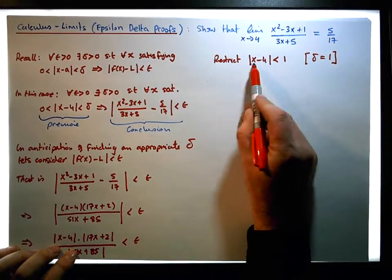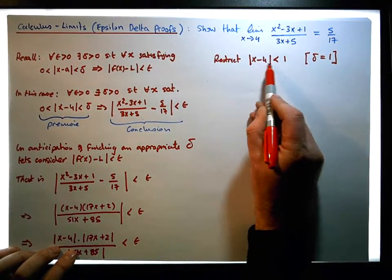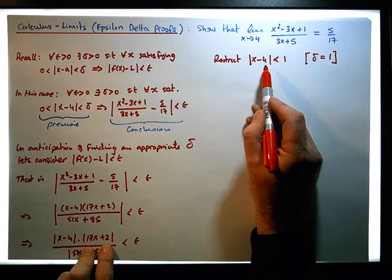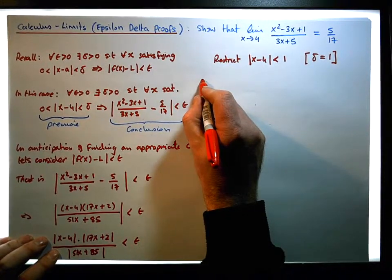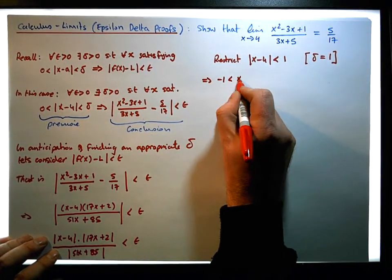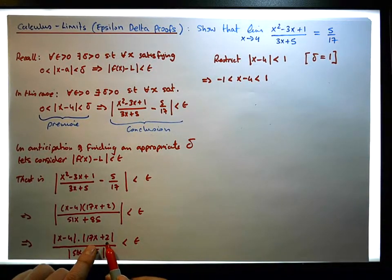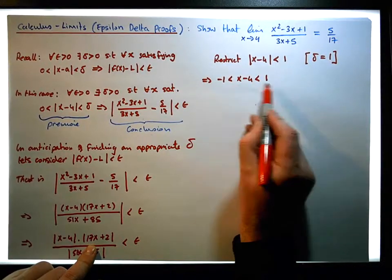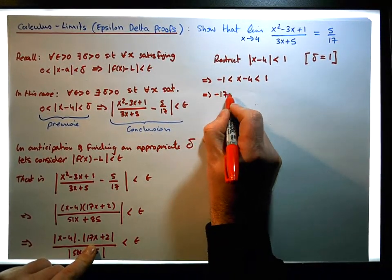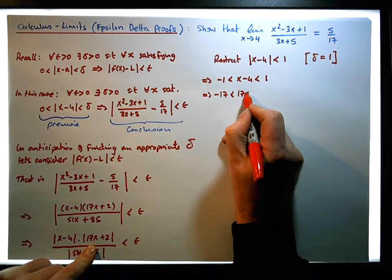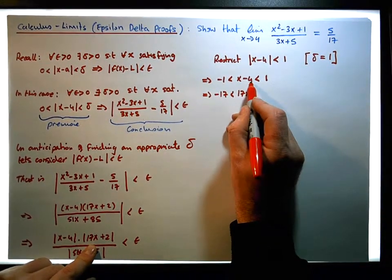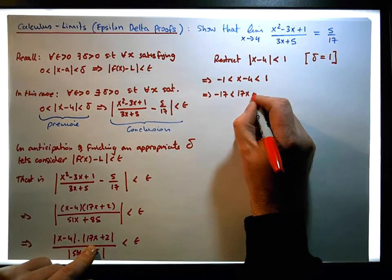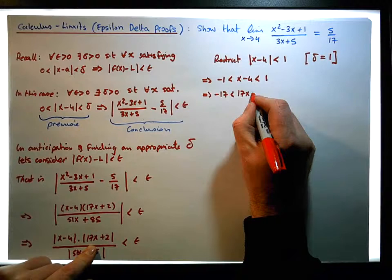From this particular fact, we're really close to 4 — within one unit of 4 — and let's see what this says about 17x plus 2. So from this, this implies that minus 1 is less than x minus 4, which is less than 1. I'd like 17x plus 2 to be in here, so if I multiply across by 17, this implies that minus 17 is less than 17x minus 68.